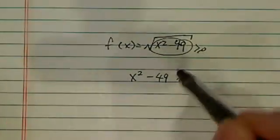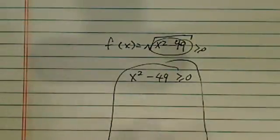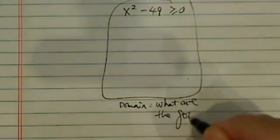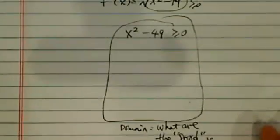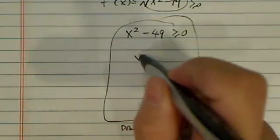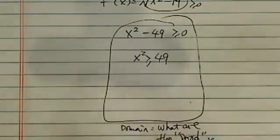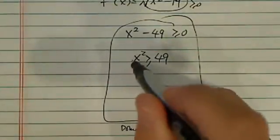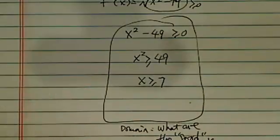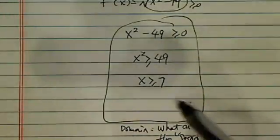Finding domain is really you're looking for what's a good x. So for this one, we'll have to require the stuff under the radical root to be positive. In order to solve this one, let's move 49 onto the other side. Now, a lot of students at this point will just take a radical root and get x is bigger than 7. That's actually not completely true.